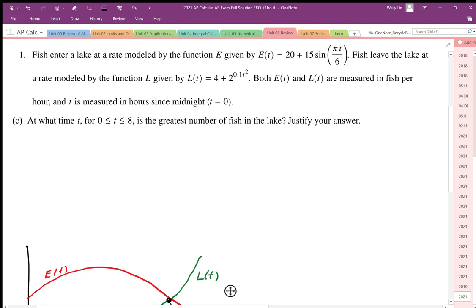We know that the max change in the number of fish, which we'll call A(t), the accumulation function, occurs when the rate of entry minus the rate of leaving is equal to zero. In other words, when E(t)